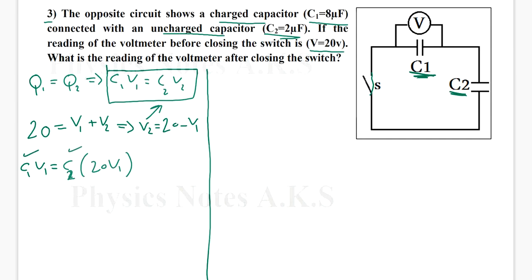Now it's going to be 8 times 10 to the power negative 6 V1 equals 2 times 10 to the power negative 6. So I changed from microfarad to farad. Of course here I forgot the minus. Now, 20 minus V1.